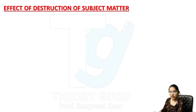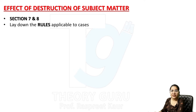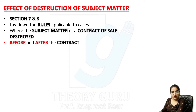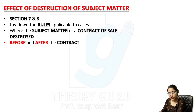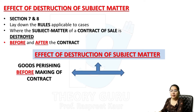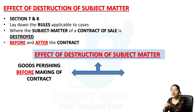Effect of destruction of subject matter — यह deal करता है दो sections के साथ, that is Section 7 and Section 8. इनके अंदर rules दिये गए हैं — rules applicable to cases where the subject matter of contract of sale is destroyed either before or after the contract. हम discuss करेंगे: goods perishing before making of contract, और goods perishing before sale but after agreement to sell।